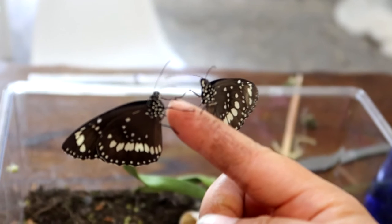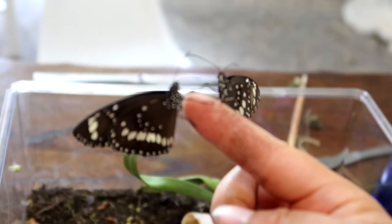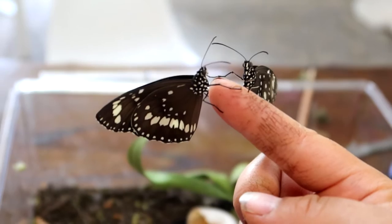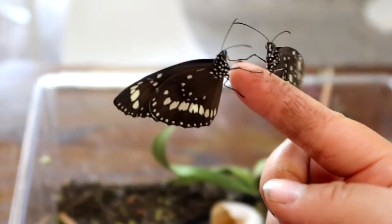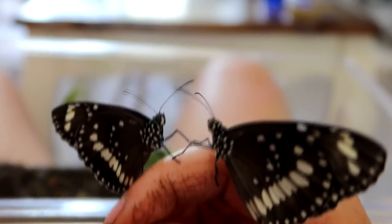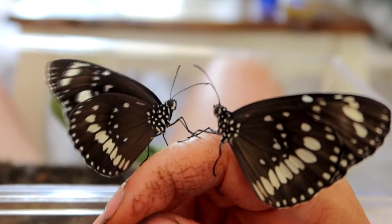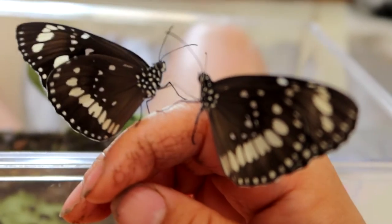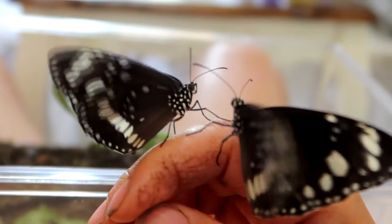I managed to get both of them on my hand and I think they're actually interacting with each other. That one seems to be slightly bigger than the other one, like bigger wings, and I'm wondering if maybe one's a male, one's a female. Look at it, this is so cool.